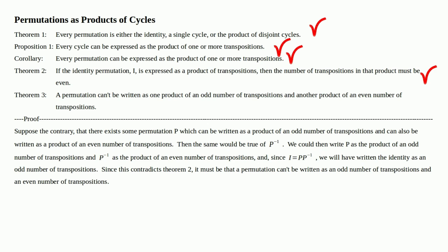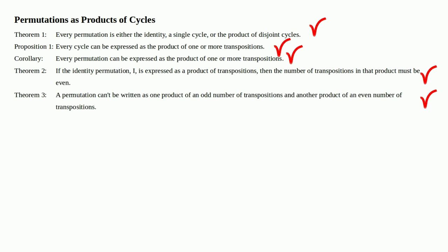Since this contradicts theorem two, it must be that a permutation can't be written as an odd number of transpositions and an even number of transpositions. So therefore, as theorem three states, a permutation can only be written as a product of an odd number or an even number of transpositions, but not both.